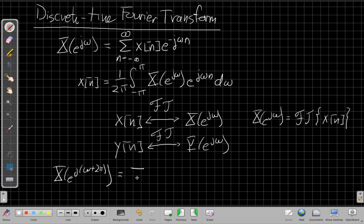If I go evaluate the Fourier transform at omega plus 2 pi, I just substitute that in here for omega. And I can use properties of exponentials to write this as x of e to the j omega n and e to the minus j 2 pi n.